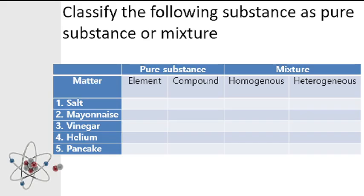Here are more examples. Classify the following as pure substances or mixtures; if pure substance, classify as element or compound; if mixture, classify as homogeneous or heterogeneous. Salt is a pure substance — it is a compound. Mayonnaise is a mixture and is heterogeneous — under microscope, the particles are not fully combined. Vinegar is a mixture and is homogeneous — it is a mix of acetic acid and water. Helium is a pure substance and is an element. Pancake is a mixture and is homogeneous.